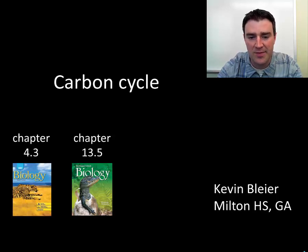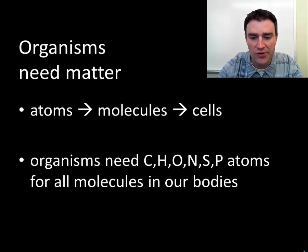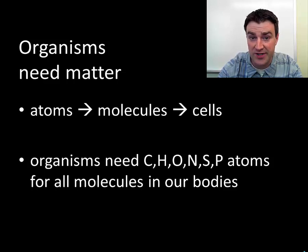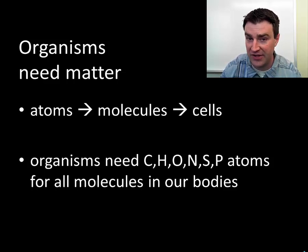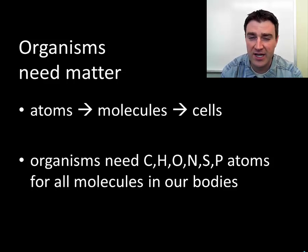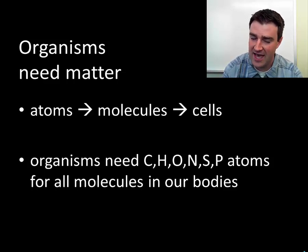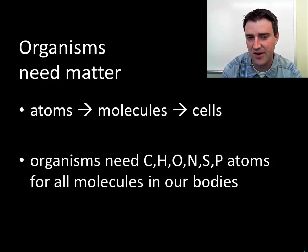In this video we're going to talk about how carbon cycles around the biosphere. We're really interested in studying these cycles because organisms need access to certain atoms in order to build the molecules that make up their cells. As an introduction, we broadly need access to carbon, hydrogen, oxygen, nitrogen, sulfur, and phosphorus.